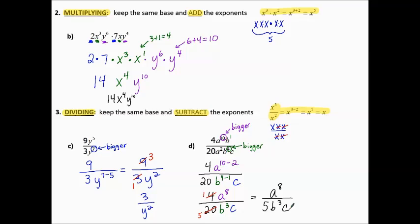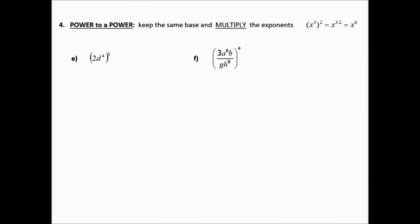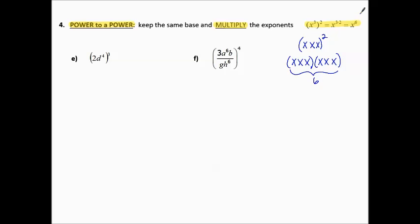So remember: multiplying — we add the exponents; dividing — we subtract the exponents. Power to a power: that's when we see a lot of parentheses. We keep the same base and multiply the exponents. x cubed squared means x to the 3 times 2, or x to the 6th. Writing it all out: x cubed in the parentheses is x, x, x. Squaring that means we write this twice — so altogether we have 6 x's. The quick way is to multiply the exponents. So usually when you see parentheses, think multiply the exponents.